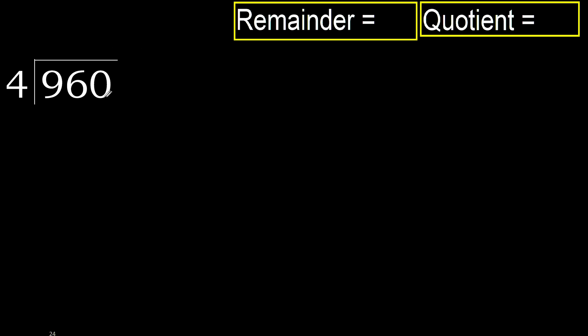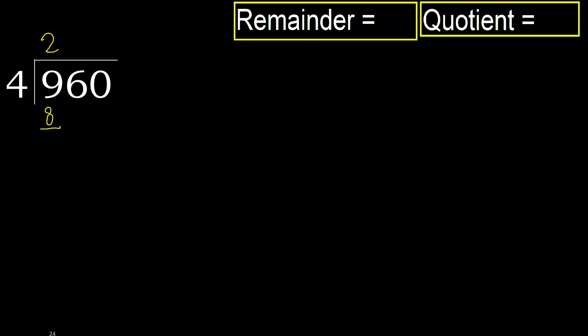960 divided by 4. 9 is not less, therefore work with 9. 4 multiplied by which number is nearest to 9 but not greater? 4 multiplied by 3 is 12, which is greater. 4 multiplied by 2 is 8, which is not greater. Subtract: 9 minus 8 is 1.